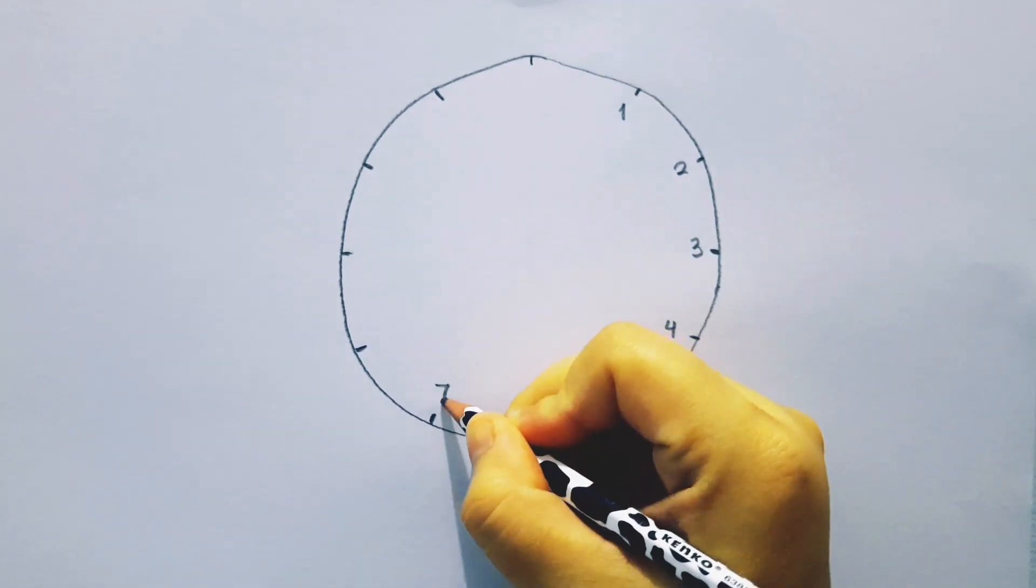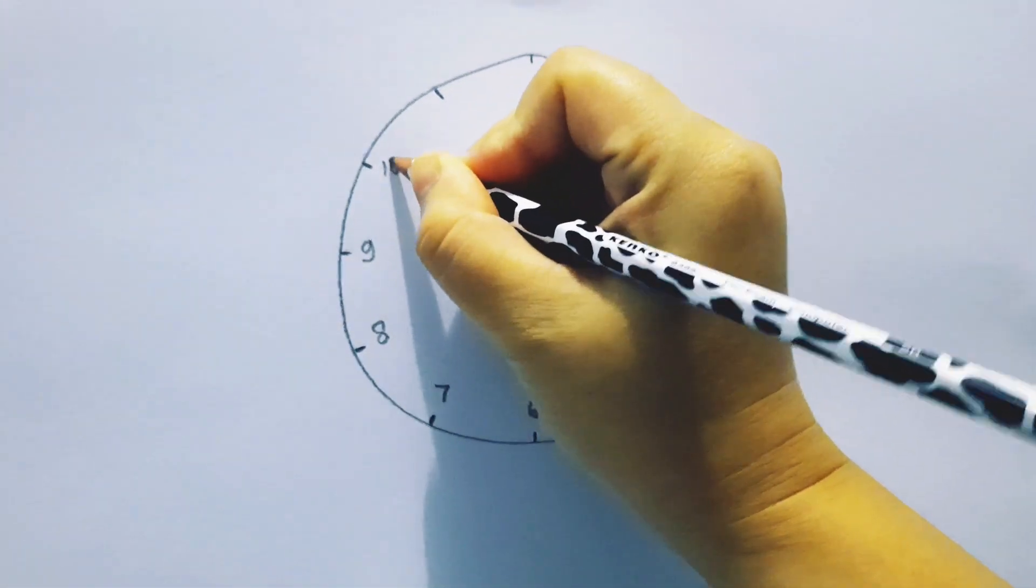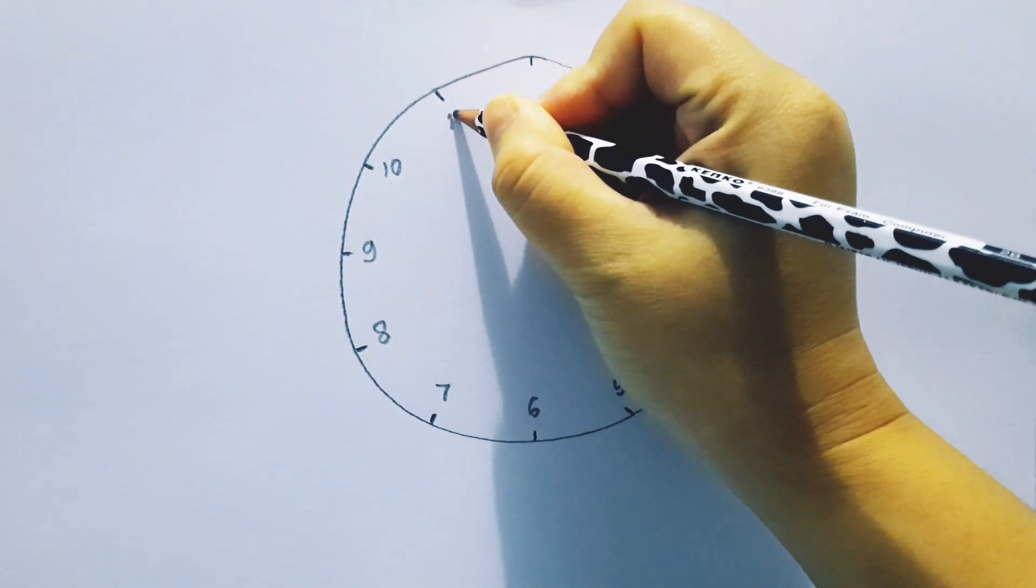Mm-mm. You need to put a dot right in the middle before you can draw the short hand and the long hand of your clock to show the time.